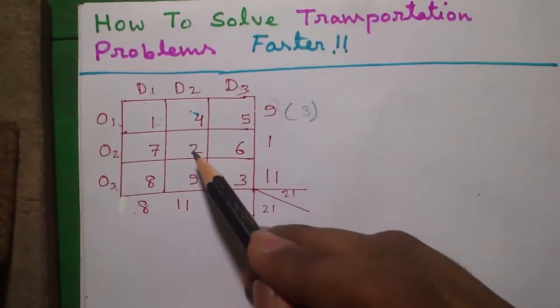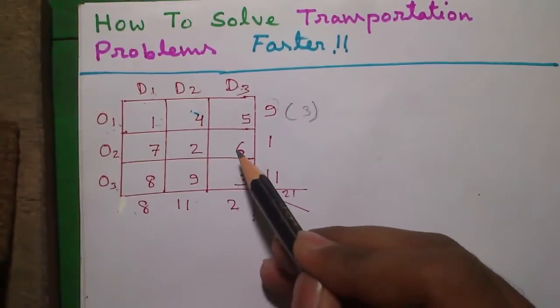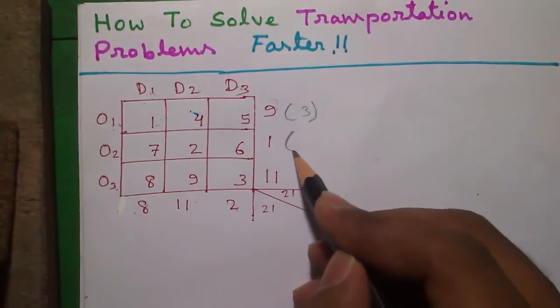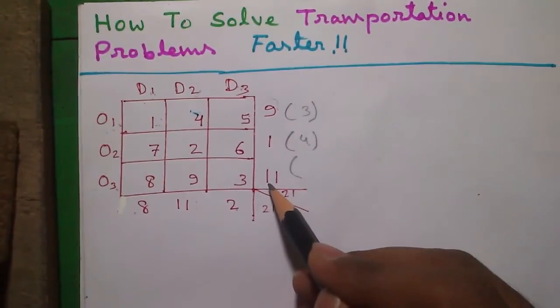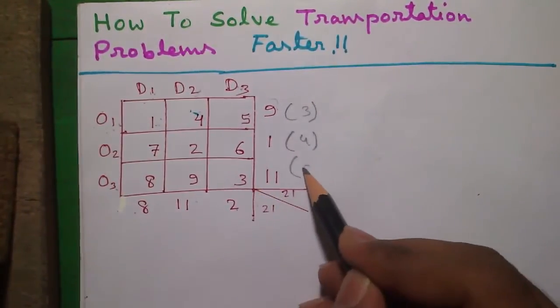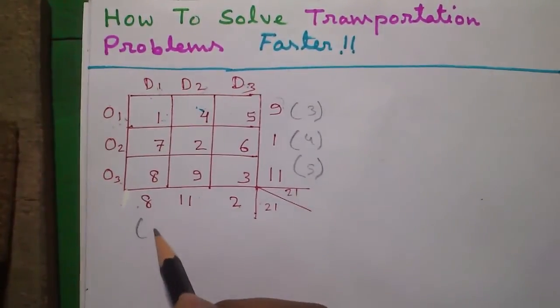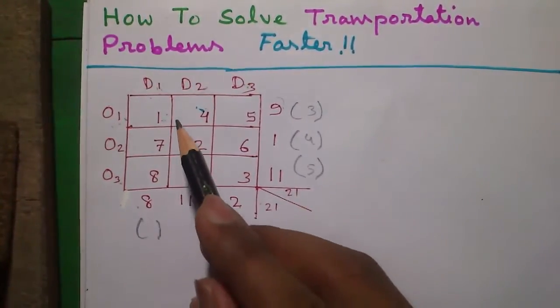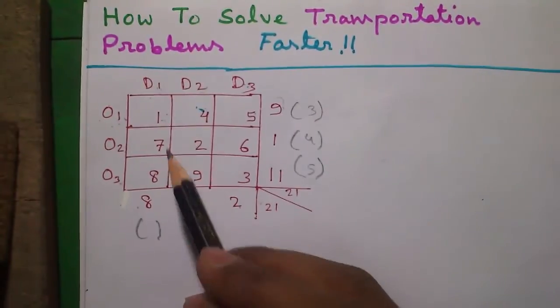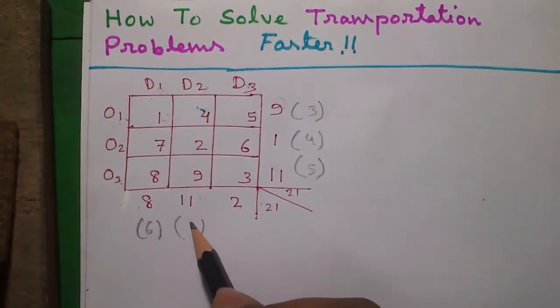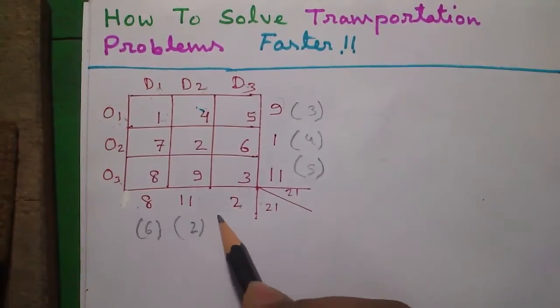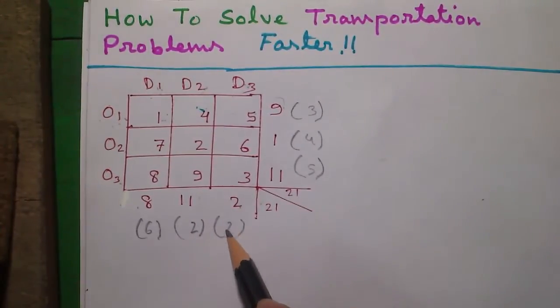Similarly in row 2 the smallest number is 2 and next smallest number is 6. So 2 subtracted from 6 is 4. For row 3 it's 8 minus 3, which is 5. So for column 1 it is 6, for column 2 it is 2, and for column 3 it is 2.